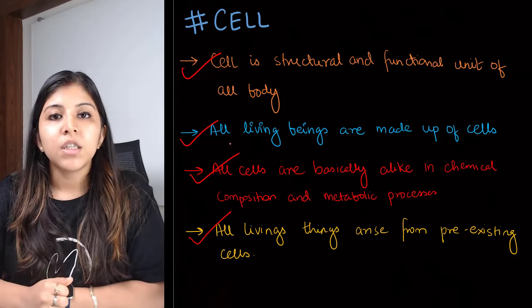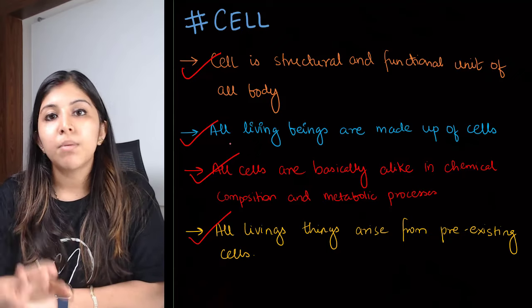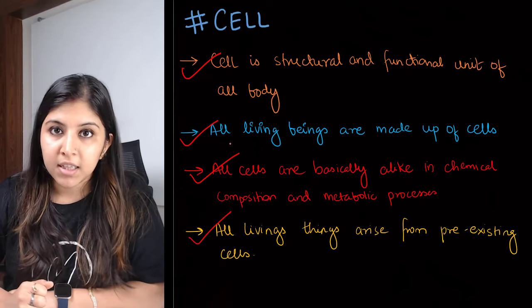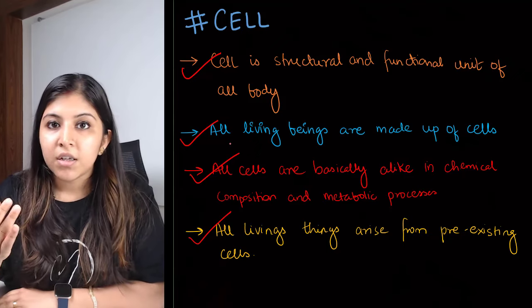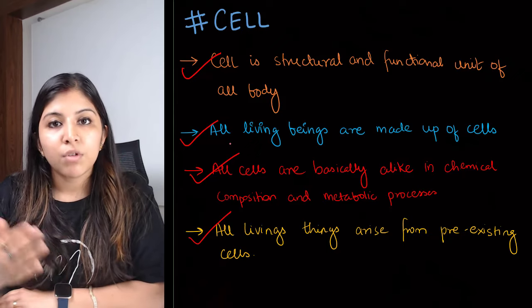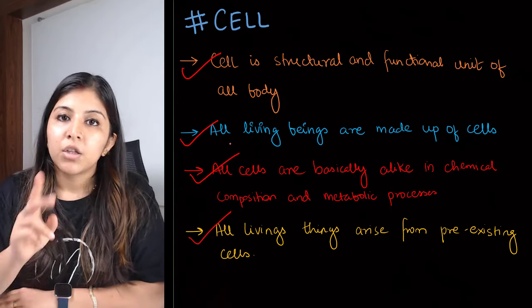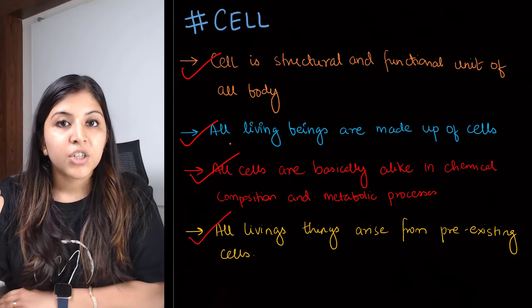So this is all we need to know about the properties. Now, coming to cell theory — who discovered it? So basically, it was given by two scientists: Schleiden and Schwann.